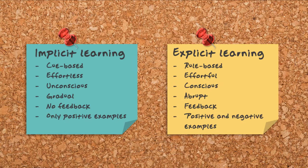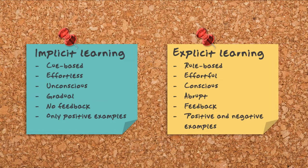Something that interested us was the question of whether implicit and explicit learning lead to different kinds of neural changes. Implicit and explicit learning are very different from each other. Implicit learning is very effortless, very unconscious, tends to be very gradual, doesn't involve feedback, and only uses positive examples. Whereas explicit learning tends to be more rule-based, more effortful, more conscious, tends to be more abrupt. You can tell someone a rule and they will just know how to use it right away. And you can give people feedback and both positive and negative examples.